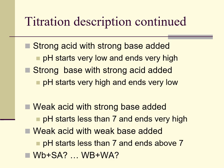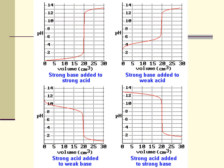So for a titration description: a strong acid with a strong base added — the pH starts very low and ends very high. A strong base with a strong acid — the pH starts very high and ends very low. If you did a weak acid with a strong base, you would start at less than seven and still end high. And the exact opposite: a weak base with a strong acid would start above seven and end low. So just all variations on titration curves.